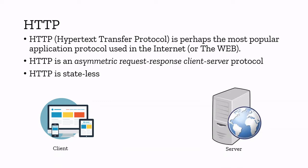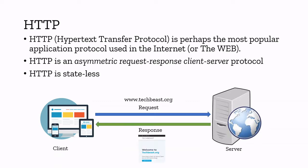In the diagram you can see a client and a server. The client is requesting for an information — we are going to browse a website here. So the client is requesting for www.techbeast.org. Then the server is checking for this information on the Internet, and once it finds this information, it's responding with the beautiful web page. That's how this HTTP protocol works in simple.